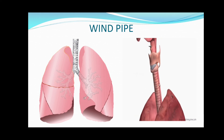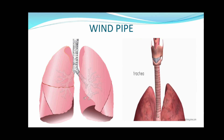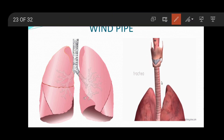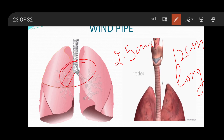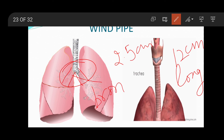Then the air reaches the windpipe. The windpipe is a delicate muscular tube situated in front of the food pipe in the neck region. It is about 12 cm in length and 2.5 cm in diameter. The windpipe then gets divided into two parts called the bronchi, as it enters into the chest cavity.